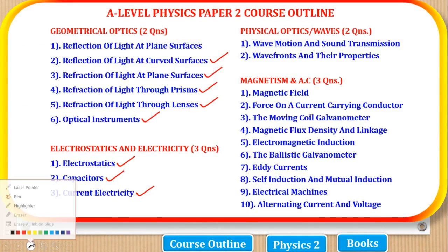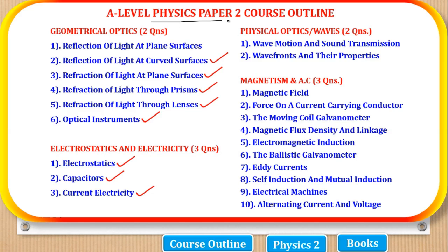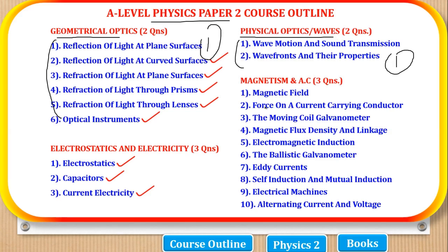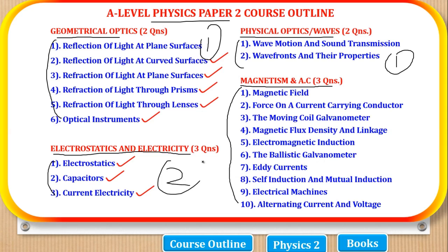Let's look at the course outline of this paper. Physics paper 2 is divided into four parts. The first part is geometrical optics, where two questions come from these topics and the student has to answer one. The second part is physical optics, where two questions come and the student must answer one. The third part is electrostatics and electricity, where three questions come. The fourth part is magnetism and AC, where three questions come. You can choose two from one section and one from another to make five questions.